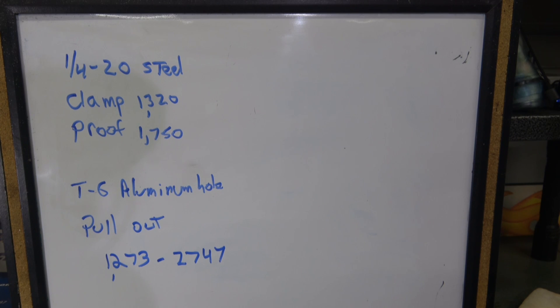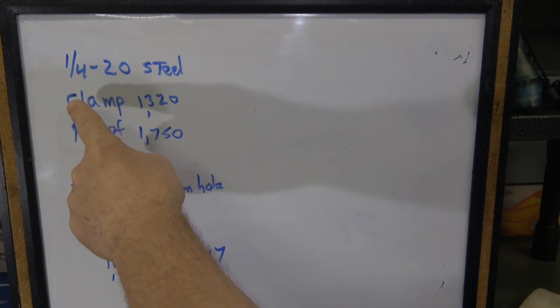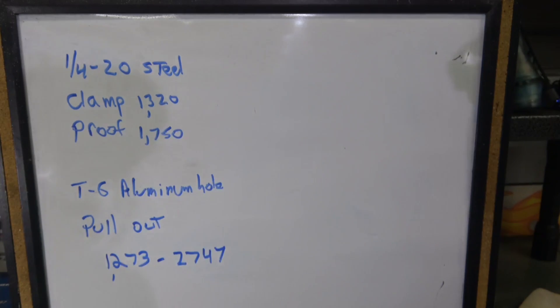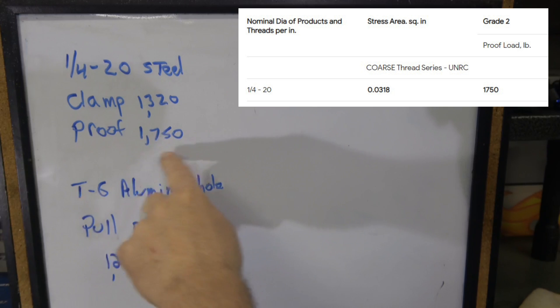Or we could do a simple web search and find out that a 1.25 steel fastener has a clamp load of 1,320 pounds. That means when you torque it down it can see a force of up to 1,320 pounds and the proof is 1,750. Proof is when it would ultimately fail.